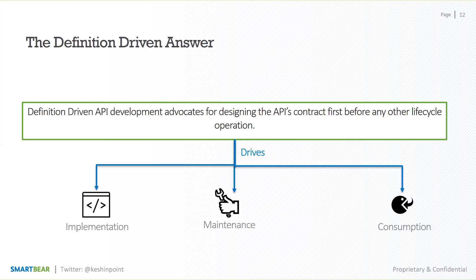It becomes so much easier to maintain the API, especially if you want to build APIs that last for a long time. And finally, consumption — there's no point building something if no one wants to use it. Having a definition-driven approach puts the consumer first and foremost in your strategy and makes sure they have an optimal experience when consuming your API.